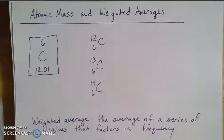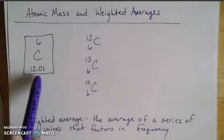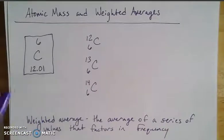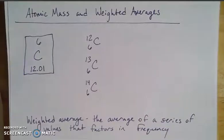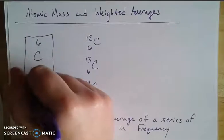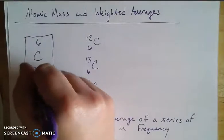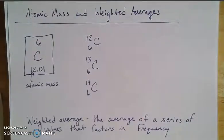I want to talk about the periodic table and atomic mass values. If we look at one square on the periodic table, we have our element symbol — this is carbon — we have the atomic number at the top, which tells me how many protons are in the nucleus of that carbon, and we have the atomic mass at the bottom. This is slightly different than the mass number, which we've covered in another video. Atomic mass is the mass of one atom in atomic mass units.